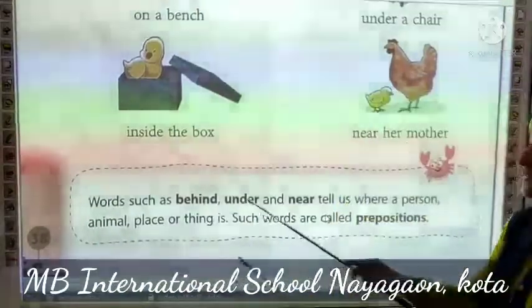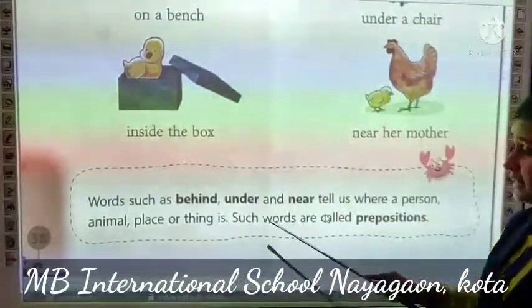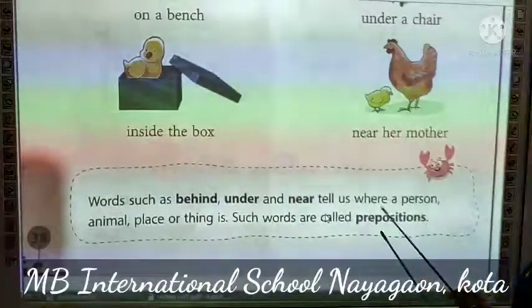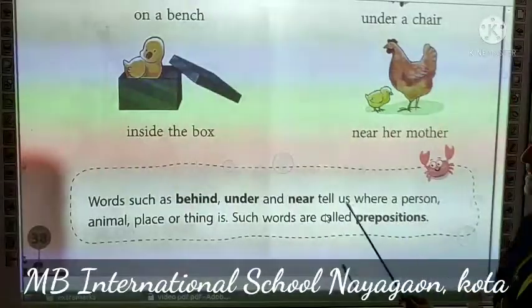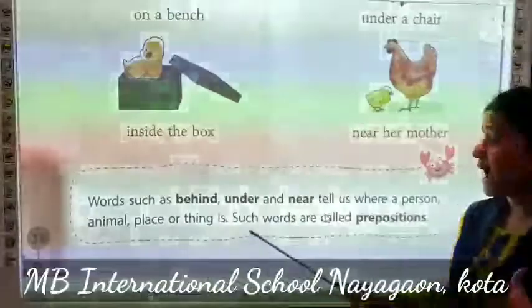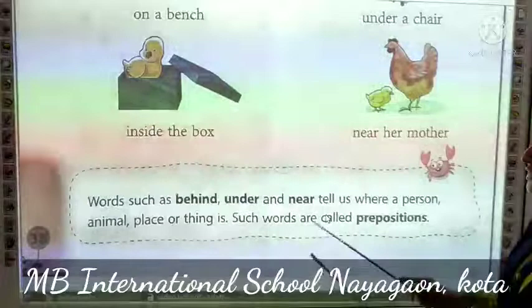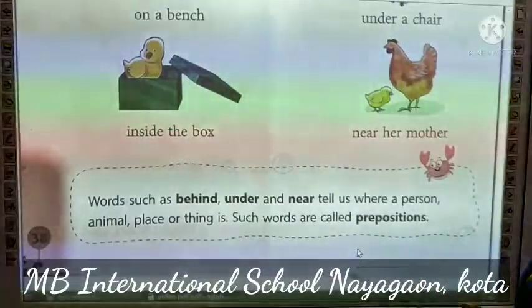Words such as behind, under, and near tell us where a person, place, animal, or thing is. Such words are called prepositions.